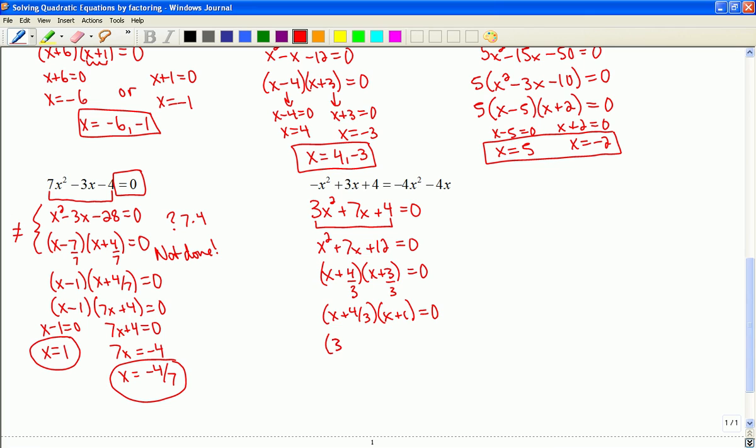And that's going to leave me with 3x plus 4 times x plus 1 equal to 0. When 3x plus 4 equals 0, that means 3x is equal to negative 4. So x is negative 4 thirds. And when x plus 1 equals 0, x is equal to negative 1. So these are the two solutions that we would seek.